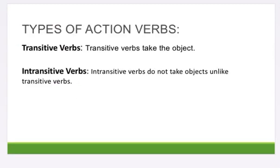Types of action verbs. Number 1: Transitive verbs — transitive verbs take an object. Number 2: Intransitive verbs — intransitive verbs do not take objects, unlike transitive verbs. Thank you. Goodbye.